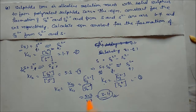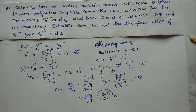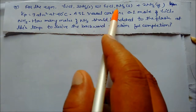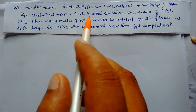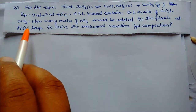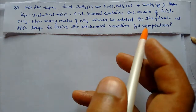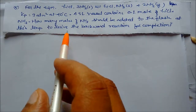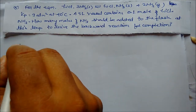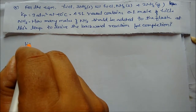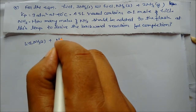Next problem: for the equilibrium LiCl·3NH3 (solid) ⇌ LiCl (solid) + 3NH3 (gas), Kp is given as 9 atm³ at 40°C. A 5-liter vessel contains 0.1 mole of LiCl. We need to find how many moles of ammonia should be added to drive the backward reaction. We write the reverse equation.